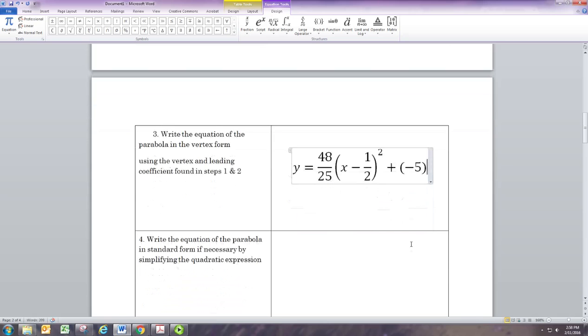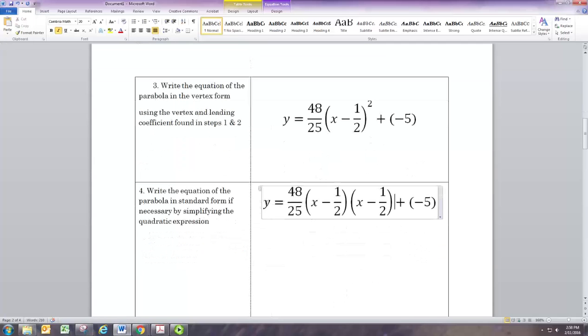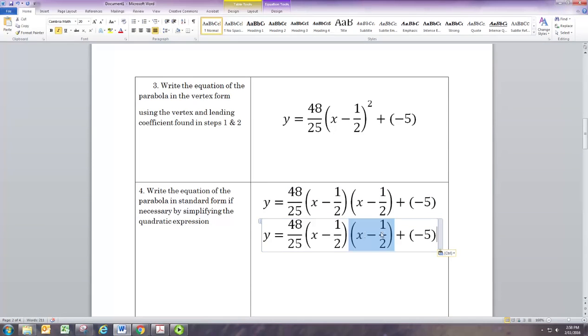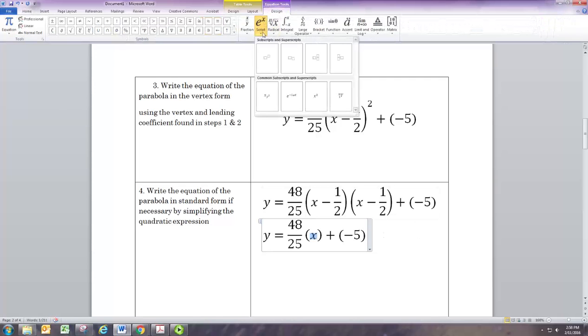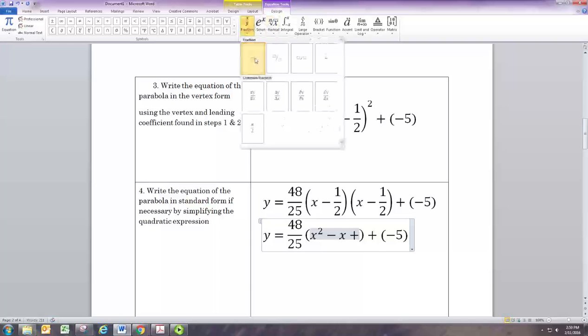Now you may want this in standard form. To get that you're going to have to simplify this expression by multiplying it out. Remember that (x - 1/2) quantity squared really means you're multiplying that by itself. You're looking at foiling, distributing that out. We'd have x times x, which is x squared, and negative 1/2 x and negative 1/2 x giving us negative x, and negative 1/2 times negative 1/2 would be positive 1/4.